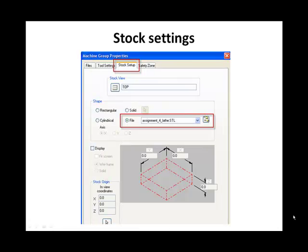Select the Stock tab. Click on the File Radio button and navigate to the Assignment 4 Lathe.STL file.